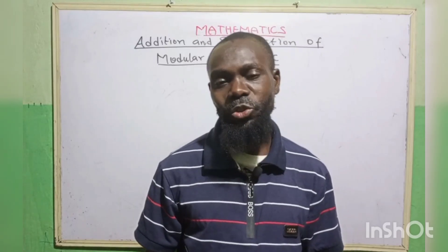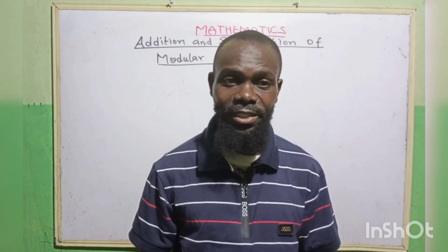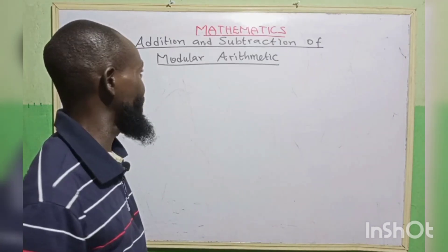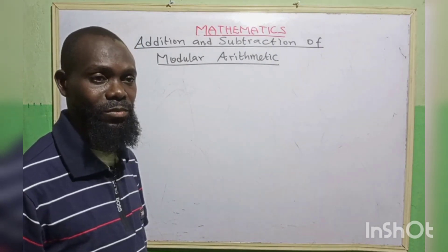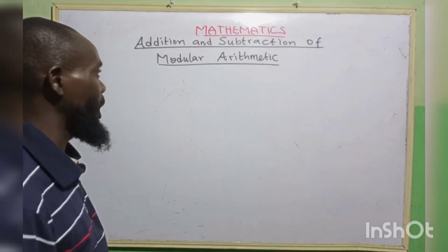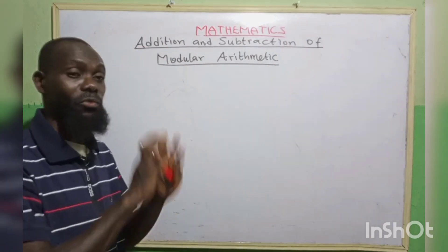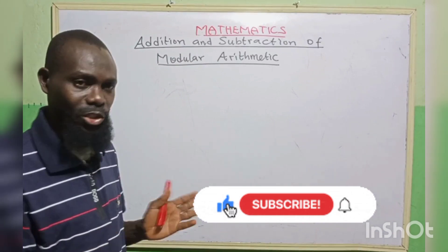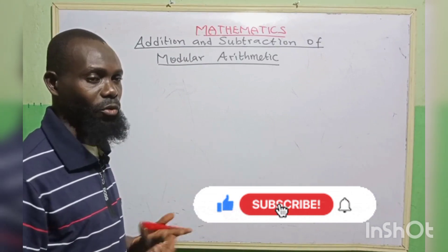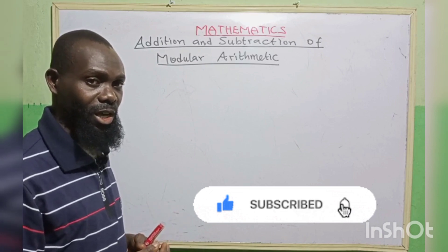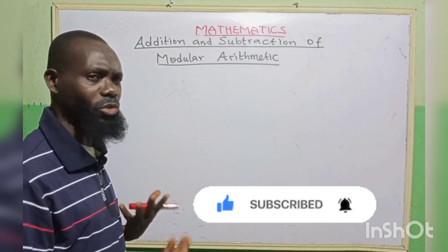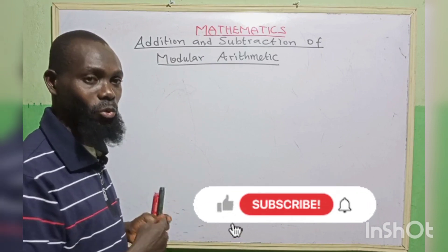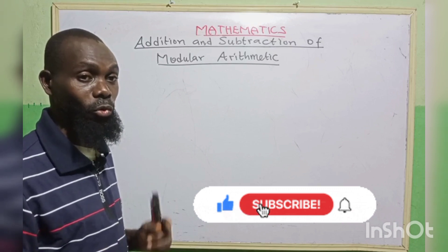Welcome back to the second lesson of our modular arithmetic. Today we are going to be looking at addition and subtraction of modular arithmetic. How do we form the addition and subtraction tables of modular arithmetic? We can form these in modulo 4, modulo 3, modulo 5, or any modulo. Let's look at an example of addition in modulo 4.